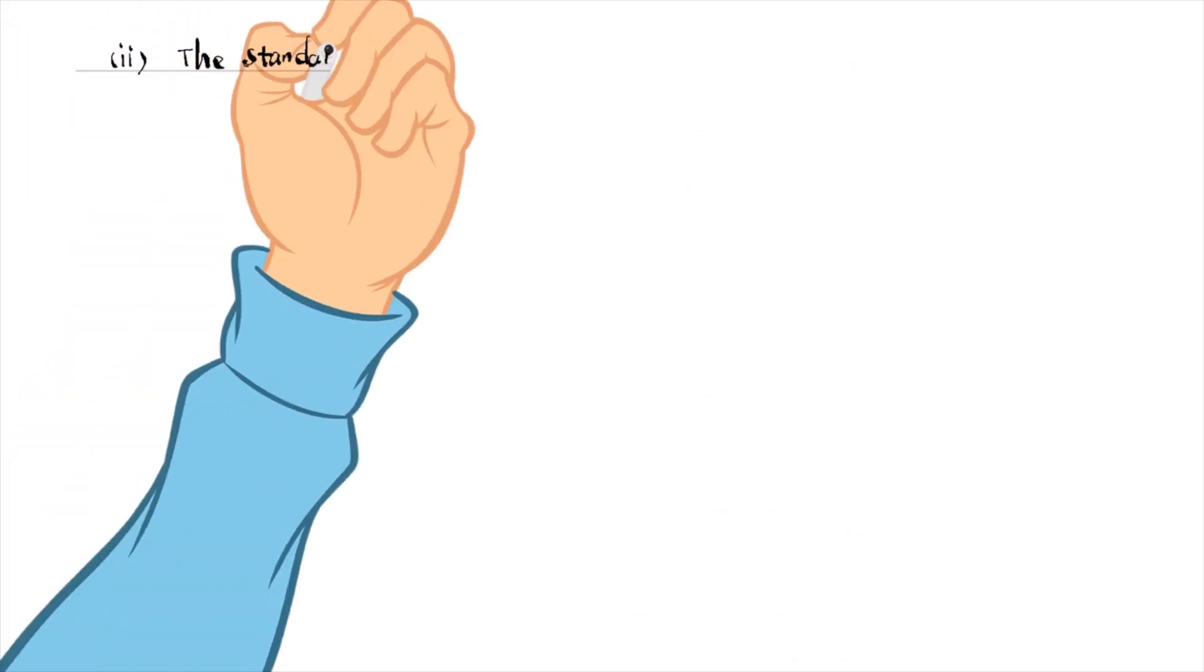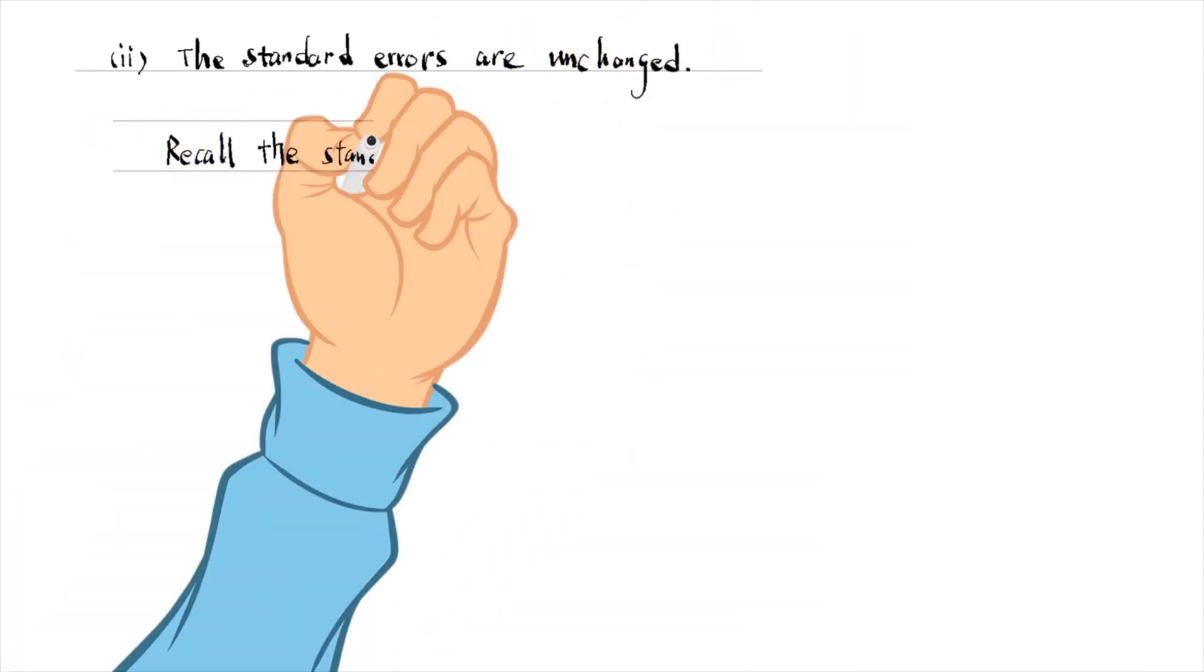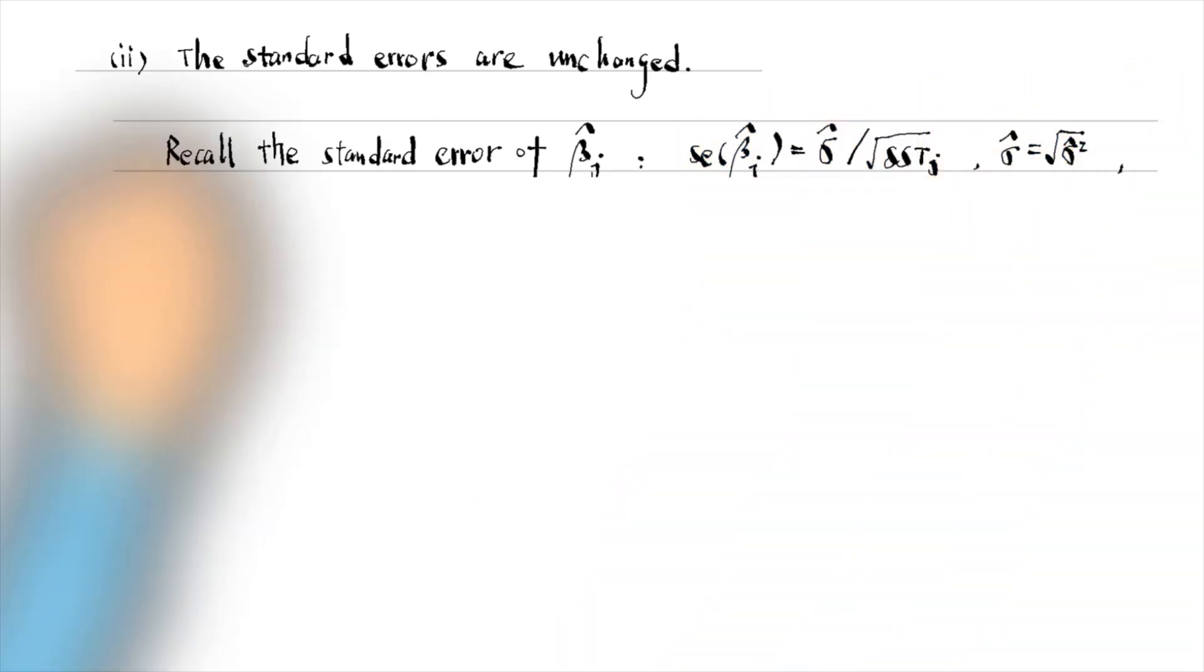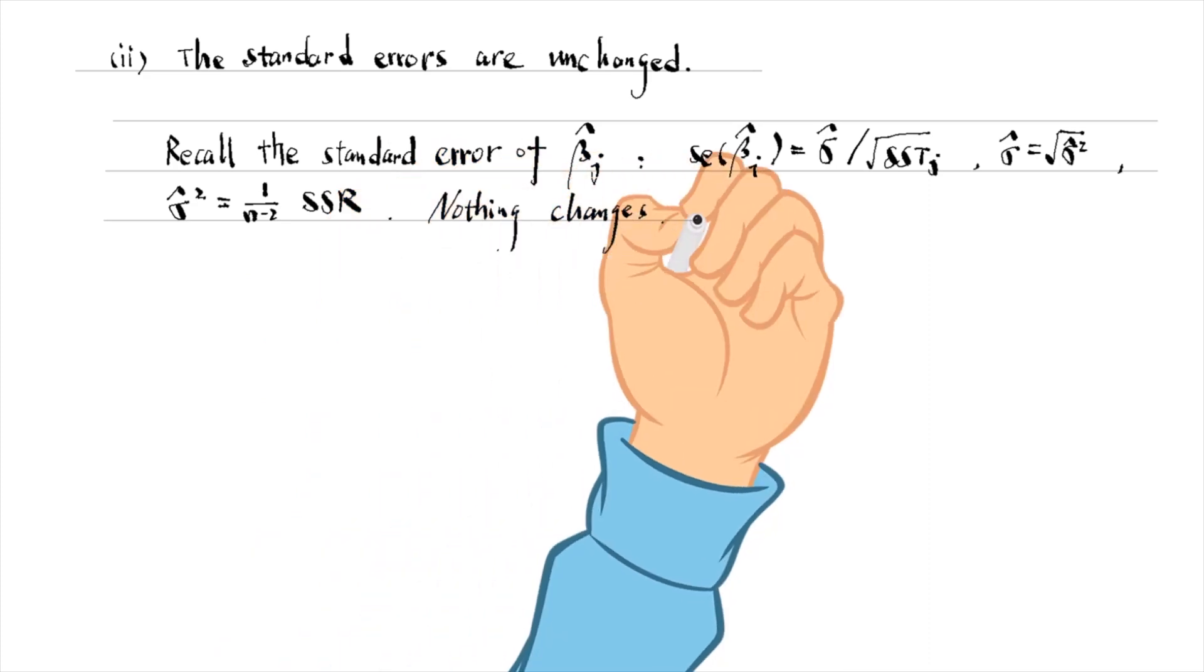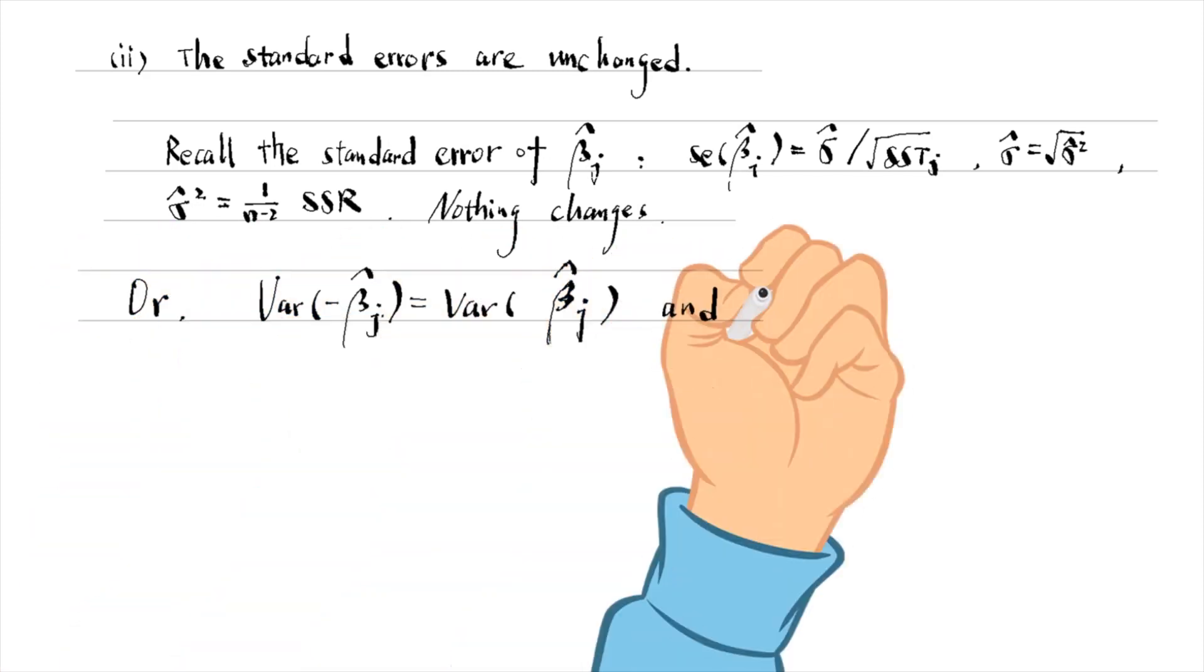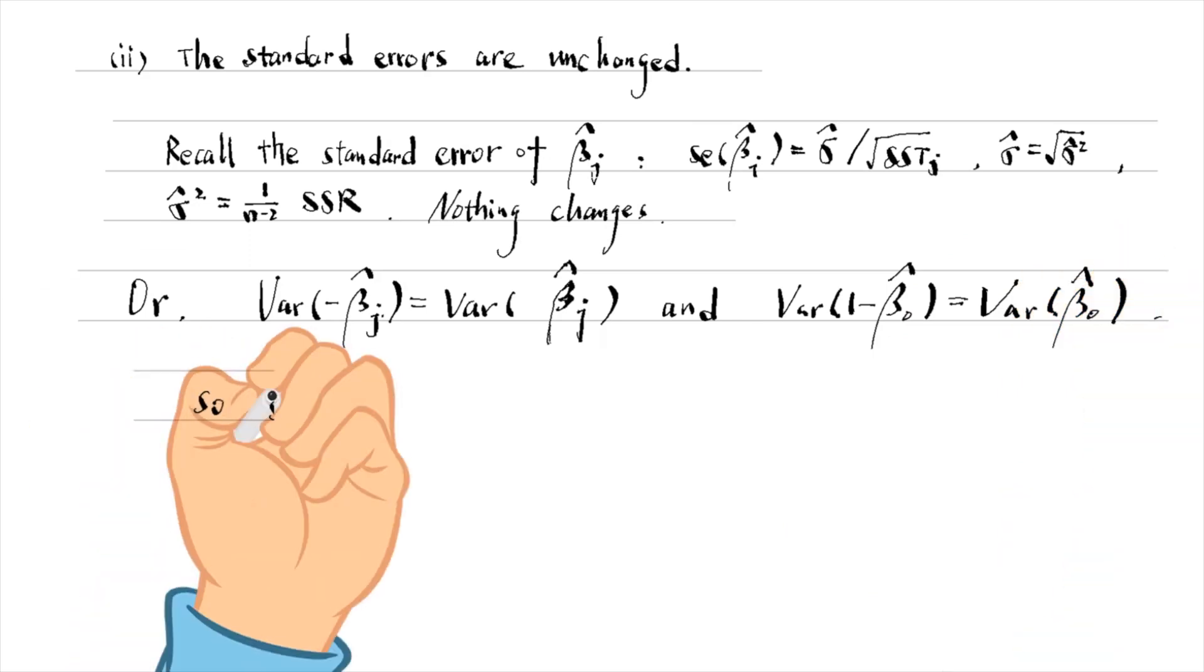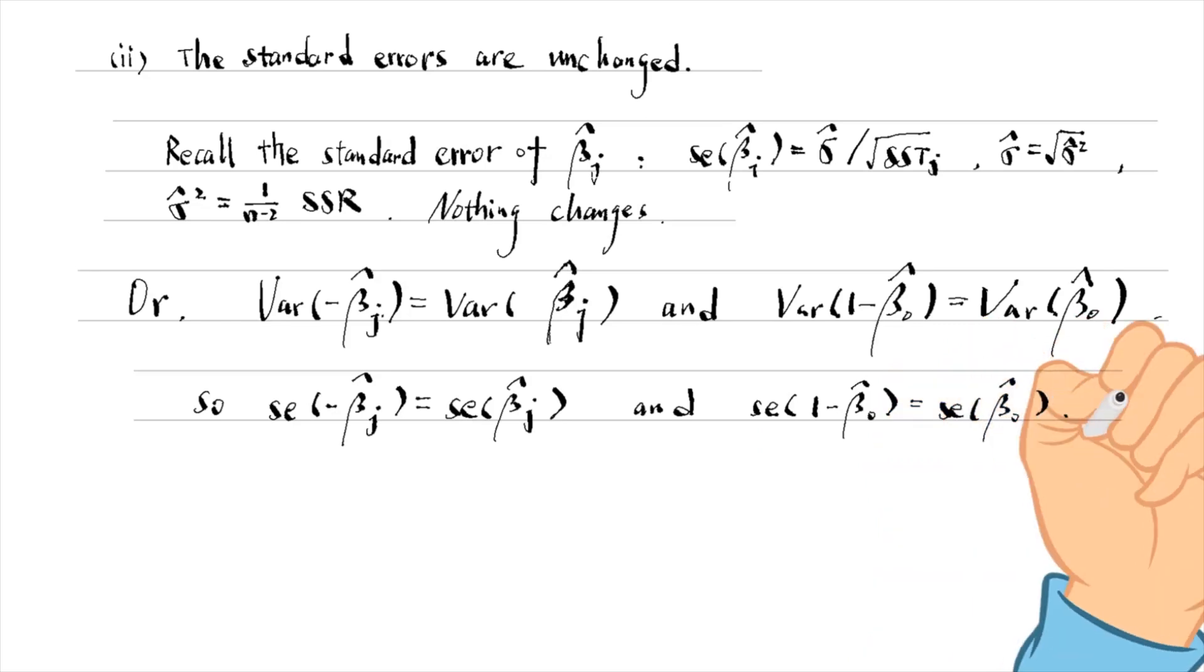The standard errors are unchanged. Recall the formula for the standard error of beta j hat. We can use the property of the variance to see that the new estimates have the same variance as the old estimates. So the standard errors should be the same.